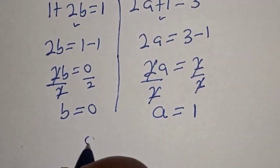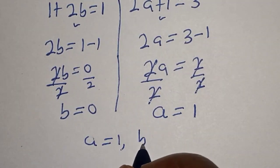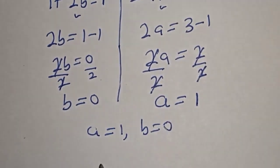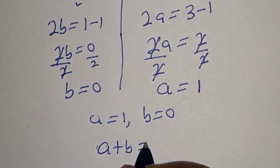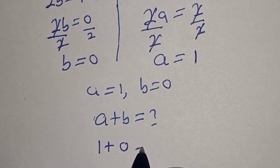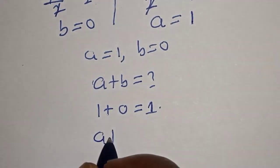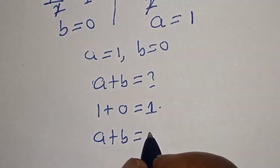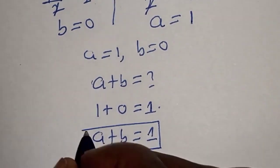Then we have a equals 1 and b equals 0. The question asks us to find a plus b, so a plus b equals 1 plus 0 equals 1. That is our final answer.